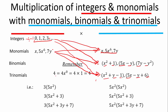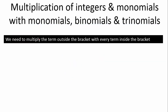Remember, 4 is the same as 4x⁰, which is the same as 4 times 1, which is 4. Now, we need to multiply the term on the outside — the term outside the bracket — with every term inside the bracket. This is BODMAS. Don't forget BODMAS. We don't need to worry about the order we do this; we're only going to worry about that when we're multiplying binomials with binomials, and we're not doing that yet.